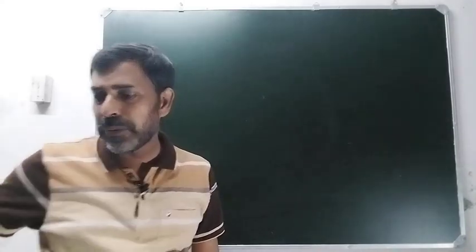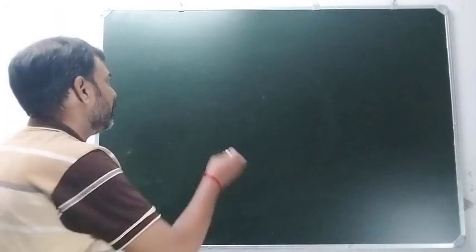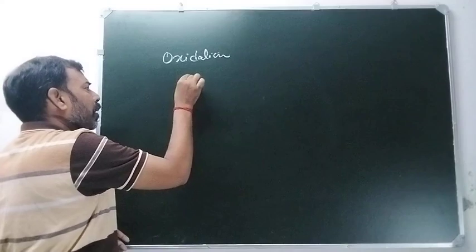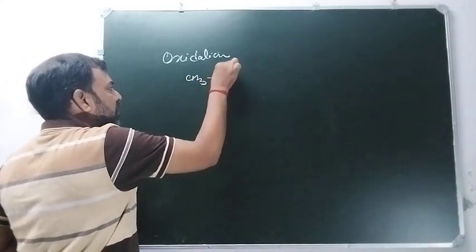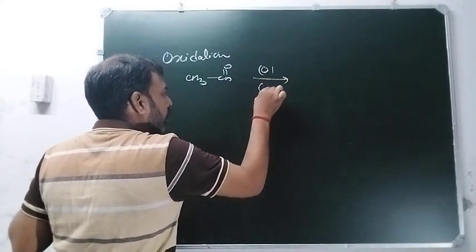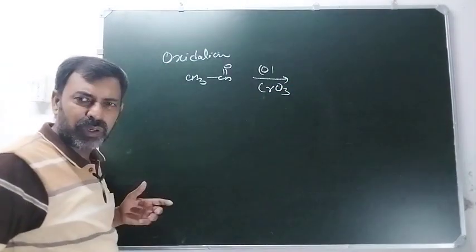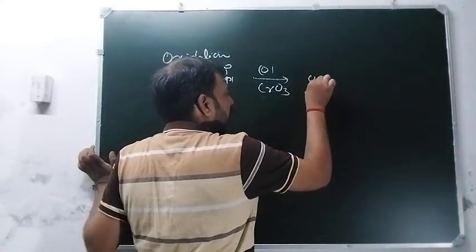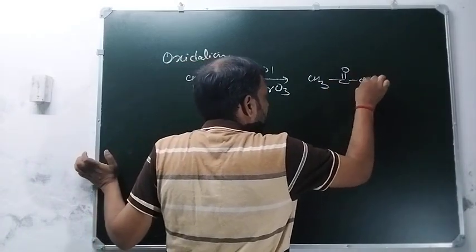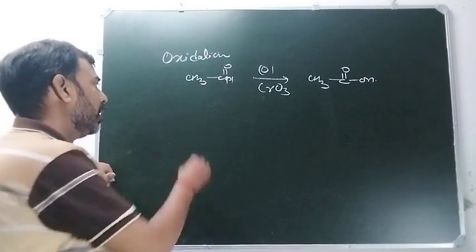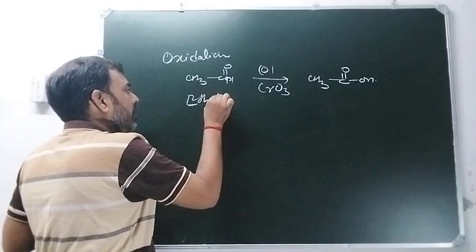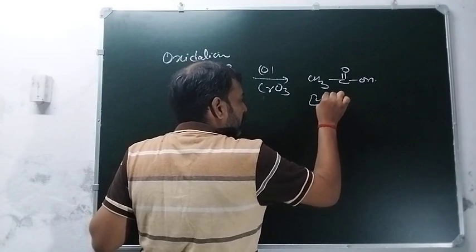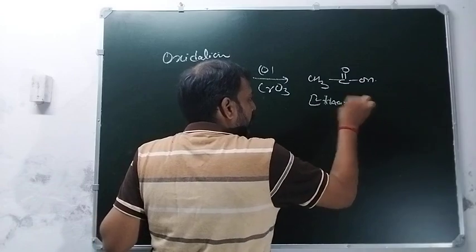Oxidation में दोनों का difference होता है। Process of oxidation - यह है आपका aldehyde: CH3, CHO। अगर हम इसे oxidize करते हैं in presence of oxidizing agent like chromic oxide (CrO3), KMnO4, K2Cr2O7, तो इसका oxidation होता है और oxidation होके बनता है carboxylic acid। यह है आपका ethanal (एक aldehyde) और यह है आपका ethanoic acid (एक carboxylic acid)।